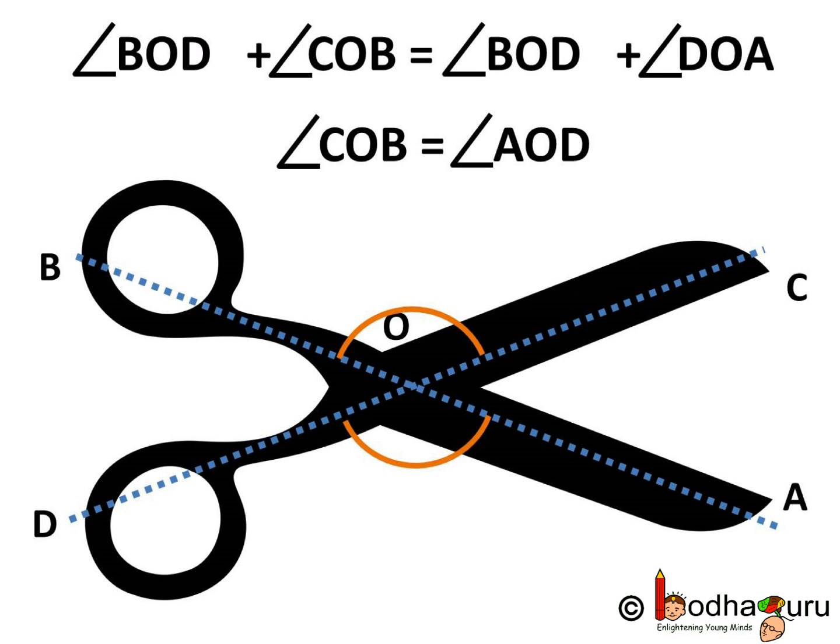So we can write angle BOD plus angle COB is equal to angle BOD plus angle DOA. We can cancel BOD from both sides and we get angle COB is equal to angle AOD. So we proved that the two vertically opposite angles are equal.